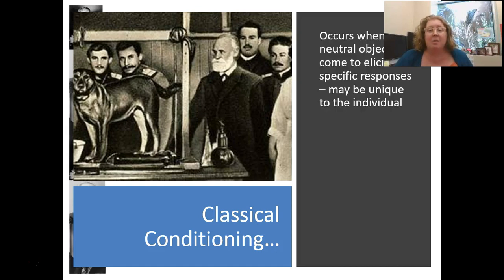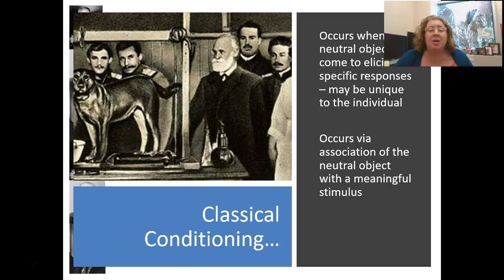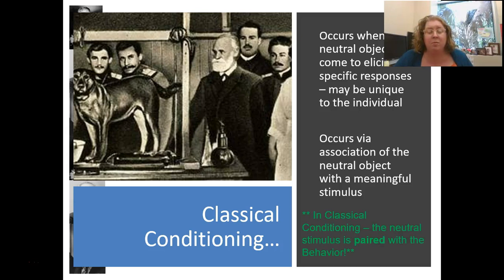Classical conditioning occurs when there's a neutral object that comes to elicit a specific response, and this response may be unique to the individual. It occurs via an association of that neutral object with a meaningful stimulus. In classical conditioning, this is happening when the neutral stimulus is occurring at the same time as the behavior — we're associating those two things together at the same time, and that's the key to classical conditioning.